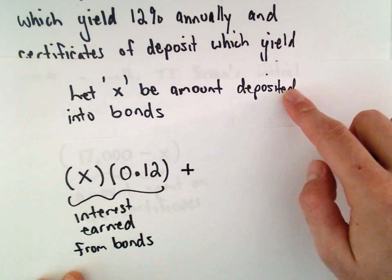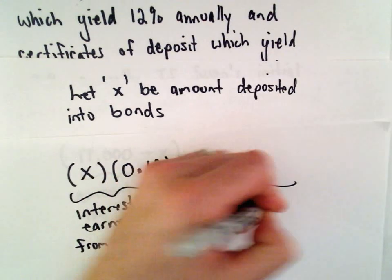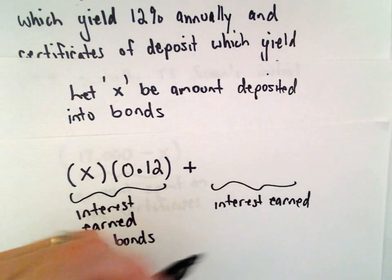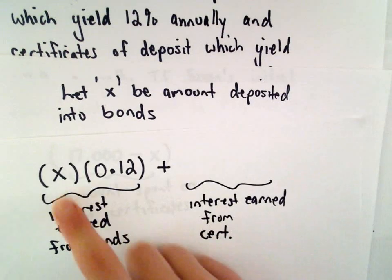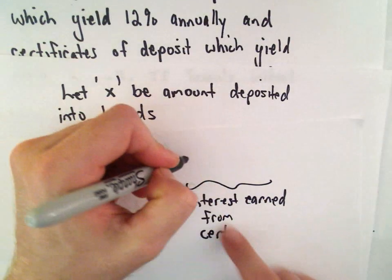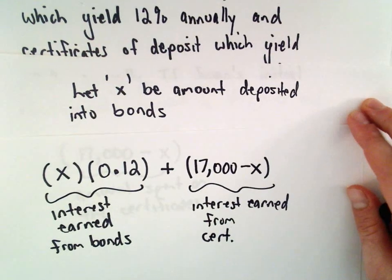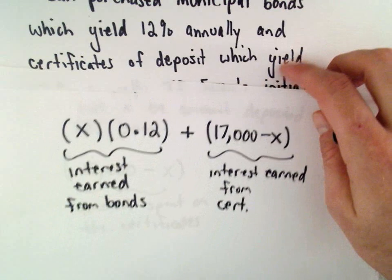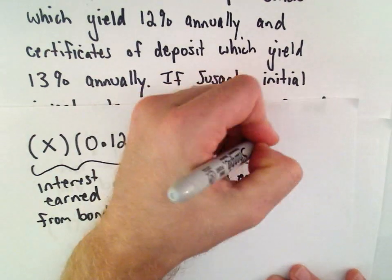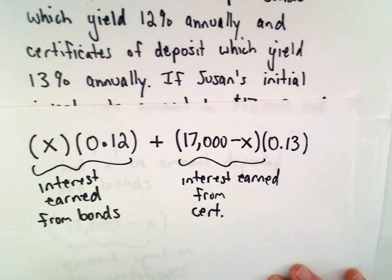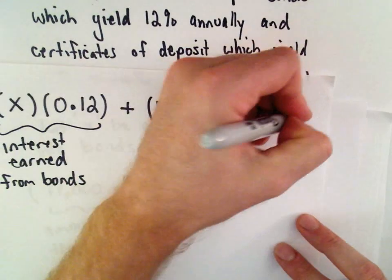We would add to that the interest earned from the certificates. To do that, we would take the amount of money that she spent on certificates, which we said was 17,000 minus X, and we would have to multiply that by the percentage that she was earning. She earned 13% on the certificates, so we'll multiply that by 0.13. And we know that that equals, in total, 2170.